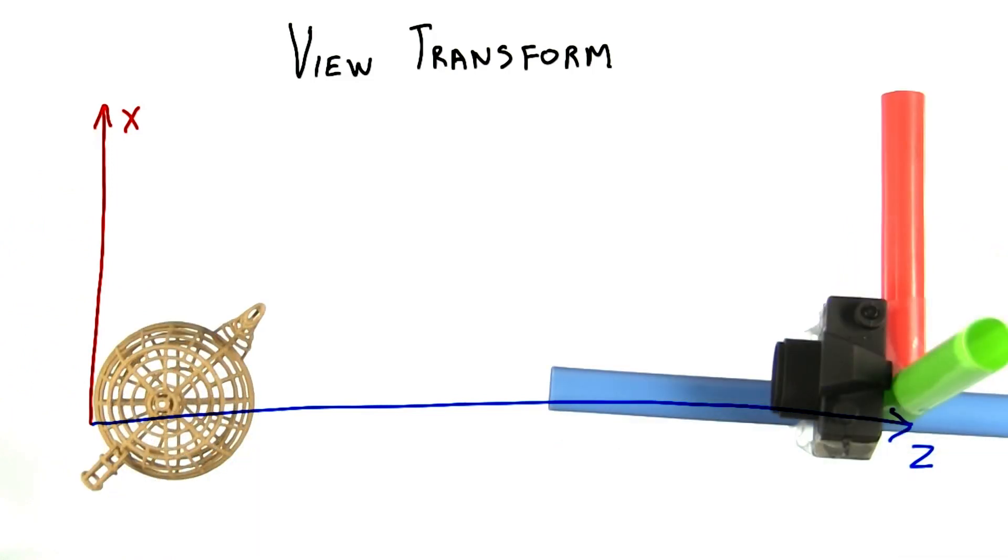The long and short here is that we use the inverse of the matrix that would position the camera in the world. Inverting basically says, no, it's all about me, the camera. Reorient everything with respect to me, me, me.